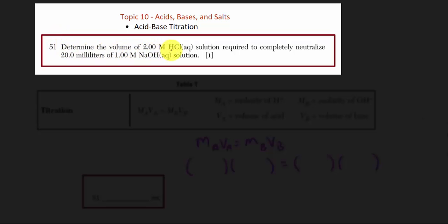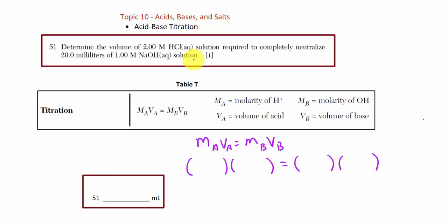Determine the volume of a 2 molar hydrochloric acid solution required to completely neutralize 20 milliliters of a 1 molar sodium hydroxide solution. This is a very straightforward titration calculation problem. From table T, we'll bring in our titration formula, transfer information from the problem directly to the formula, and solve it.